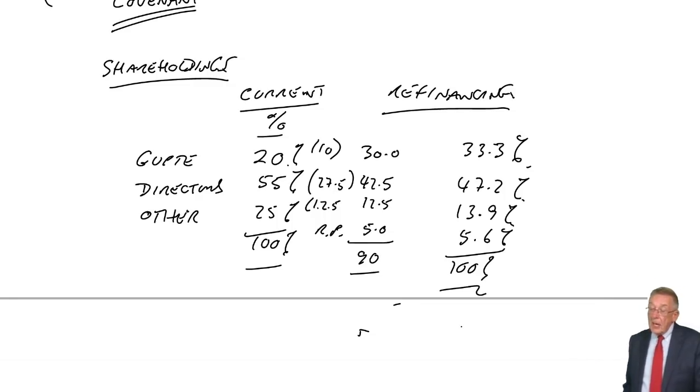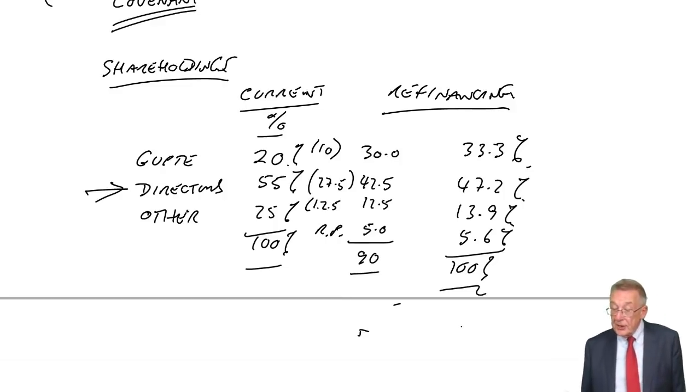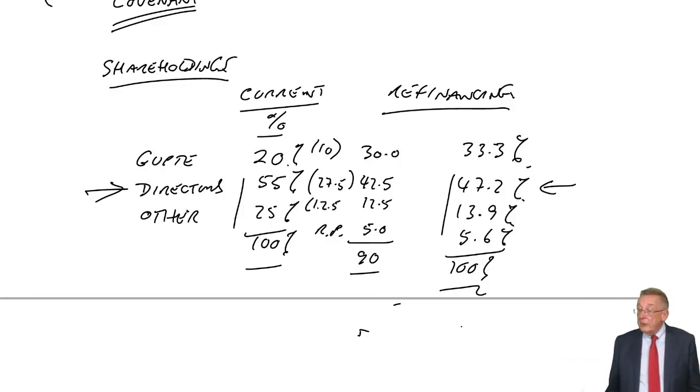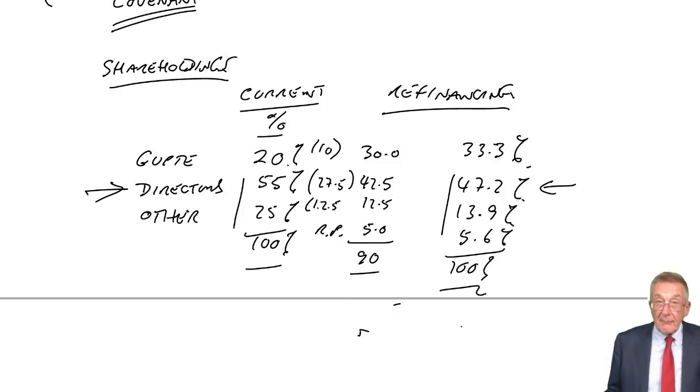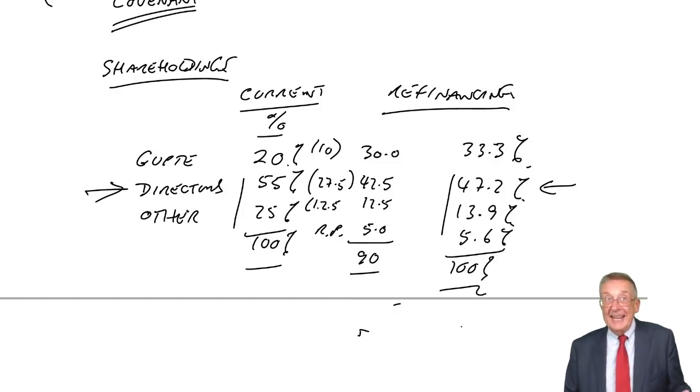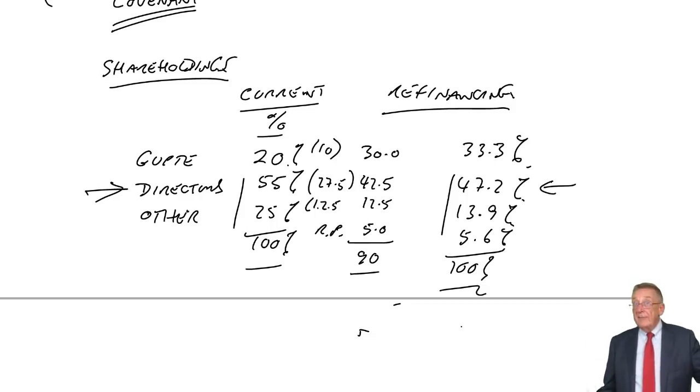Now, why is all that relevant? Well, you can comment about each of them. Directors for a start, the directors currently control, they own more than half the shares, 55%. They've now lost control, they only own 47.2%. Now, as to whether that would upset them or not, we can't say, but it's certainly a factor that we need to mention. Having said that, the Patel family as a whole did own 80%. Well, they still do have control of the family as a whole. And Gupta, of course, they have a bigger holding. It's a question of how certain they are, how sure they are that this refinancing, the reinvestment will be beneficial.